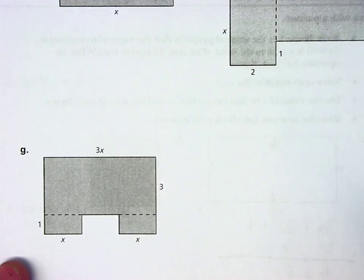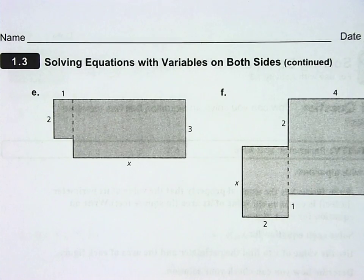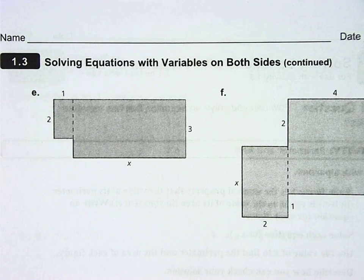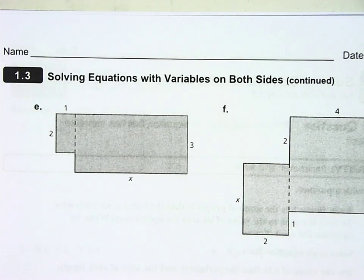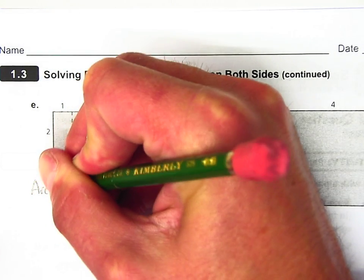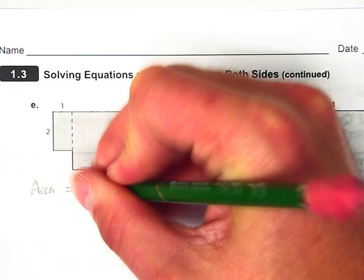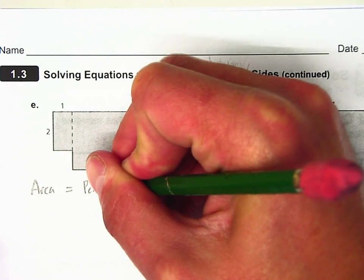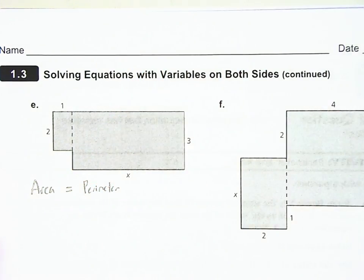Let's look at this part E on the back. I'm going to do this problem exactly the same as the other problems. This composite figure, there's going to be a little more to it, but it's the same idea. I want to start off with area is equal to perimeter.